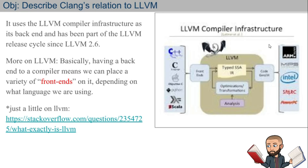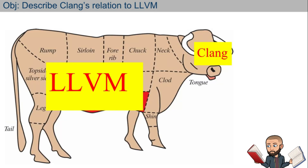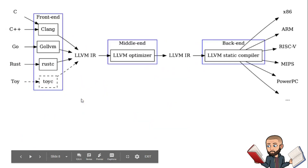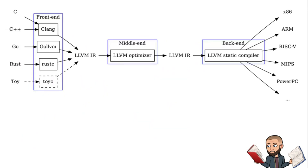Whichever assembly language is being used will then go through an analysis phase and an optimization phase so that the program you wrote can be improved and work on the machine you're using — whether that's an ARM processor phone or an Intel desktop. For visual learners: Clang is the front end, LLVM is the back end, and LLVM is doing a lot.